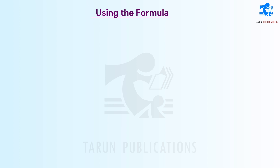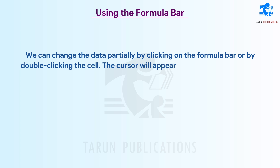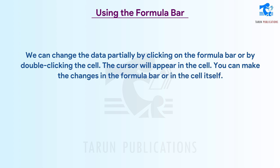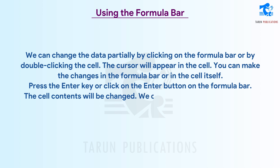Using the formula bar: we can change data partially by clicking on the formula bar or by double-clicking the cell. The cursor will appear in the cell. You can make the changes in the formula bar or in the cell itself. Press the Enter key or click on the Enter button on the formula bar. The cell contents will be changed. We can also use the F2 key to edit a cell.